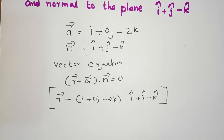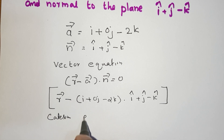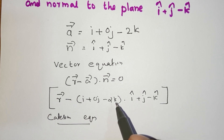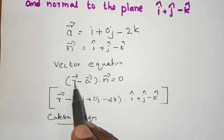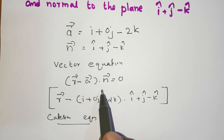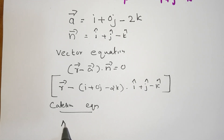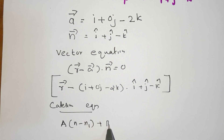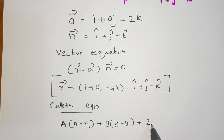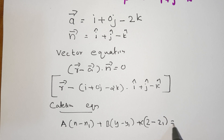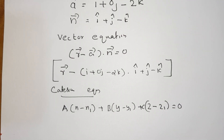This is the Cartesian equation. The Cartesian equation formula is: A(x minus x1) plus B(y minus y1) plus C(z minus z1) equals 0, where A, B, C are the components of the normal vector.